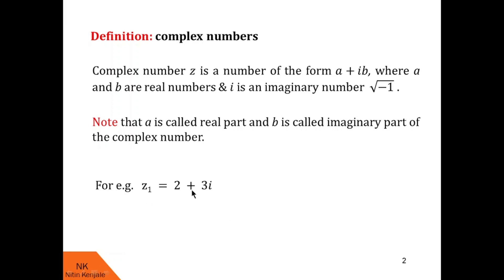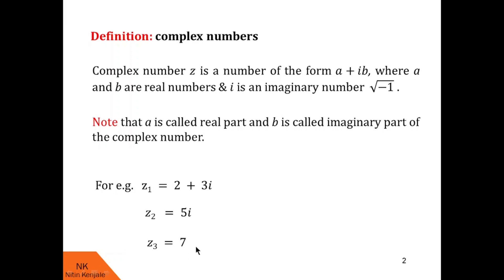z1 is equal to 2 plus 3i. Here a is 2 and b is 3. Consider another example: z2 is equal to 5i. Here a is 0 and b is 5. Such type of complex number is called as purely imaginary because the real part is 0. Similarly, if z3 is equal to 7, then a is 7 and b is 0. Such a complex number is called purely real because it does not consist of an imaginary part.